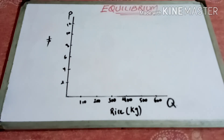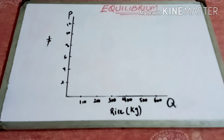Asalaamu Alaikum everyone and welcome to my channel Scarb Your Knowledge. In our previous lectures we have completely covered the demand function and the supply function. Today we are going to discuss equilibrium: what the equilibrium point is, what the equilibrium price is, how we derive the equilibrium price, and how the equilibrium quantity is derived from that equilibrium price.